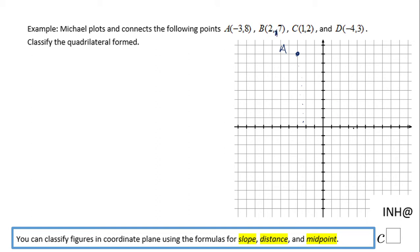Point B is 2 and 7. Be careful with them. So we're gonna go 2 right and 1, 2, 3, 4, 5, 6, 7. That's point B. Point C is 1 and 2: 1 right, 2 up.